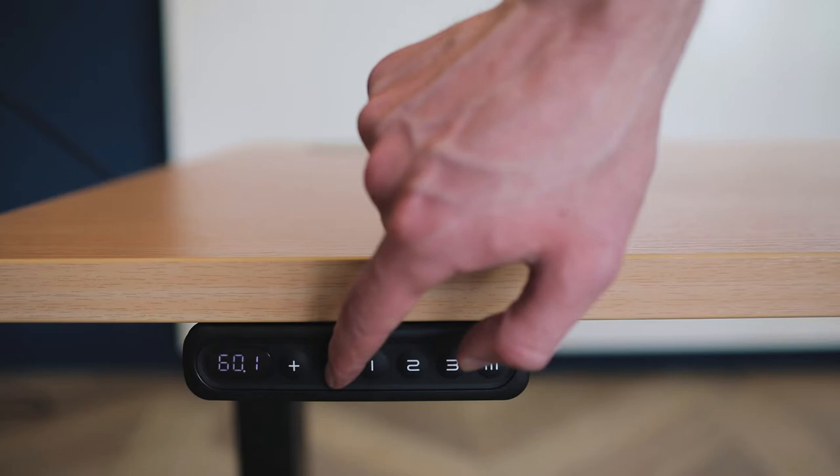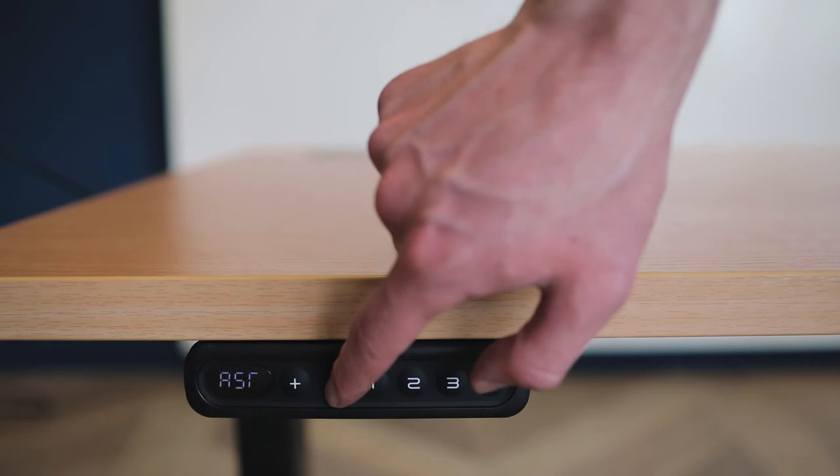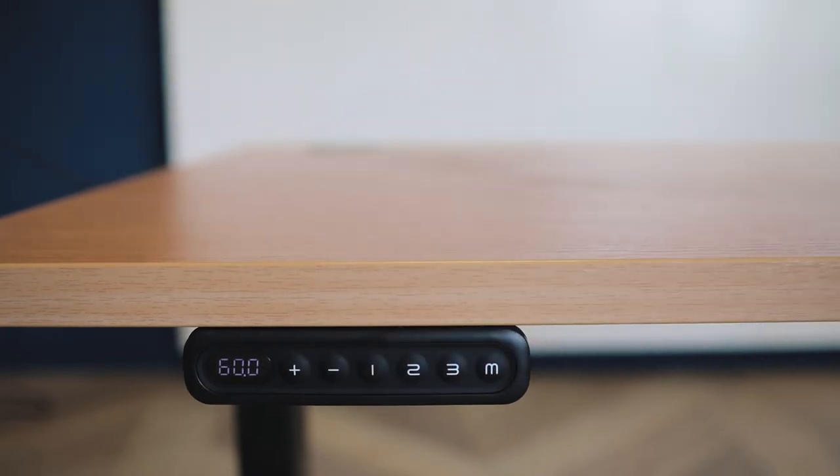Now it's time to reset your control box. You can do this by holding the down arrow until the desk reaches its lowest level. You will see the desk slightly rise after this. You can now let go of the button.